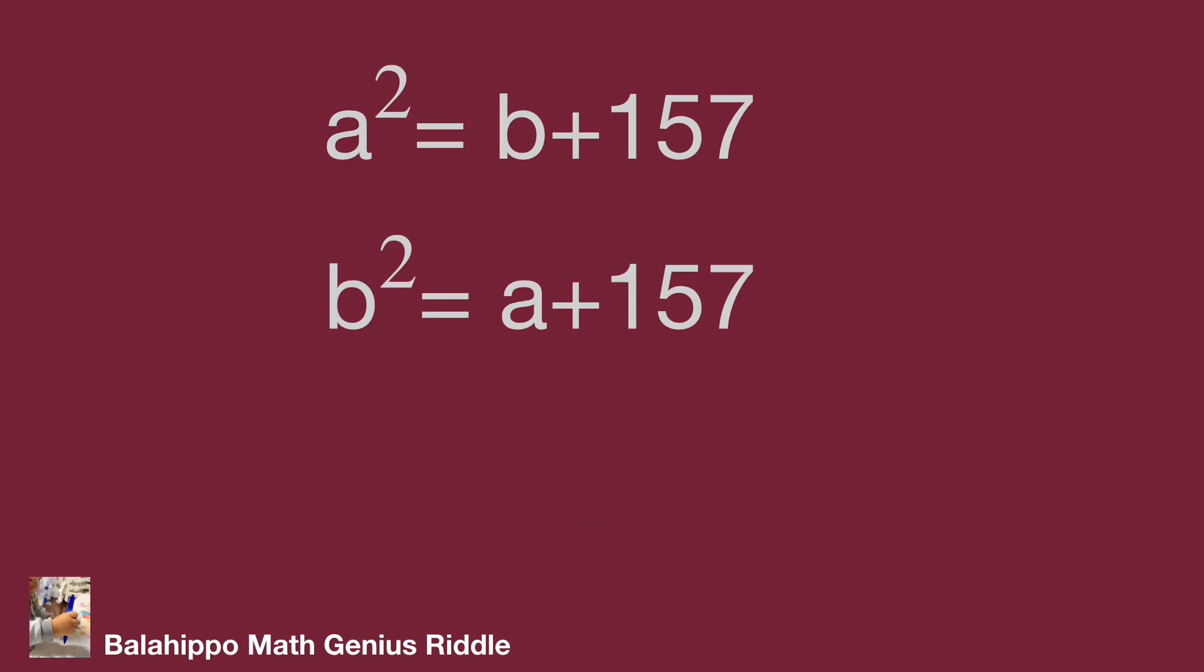We have two given equations: a squared equal to b plus 157, and b squared equal to a plus 157. They have same number 157 in both equations. We may eliminate 157 by subtraction and get new information.